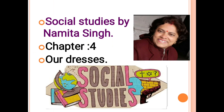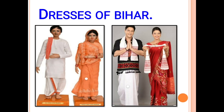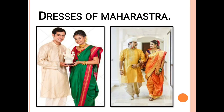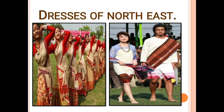Before starting the chapter, I will show you some slides of different types of dresses of India. This is the dress of Bihar - saree and dhoti kurta. This is the dress of Maharashtra. This is the dress of North East - Assamese saree and Nagaland, Mizoram. They are wearing this type of dresses.